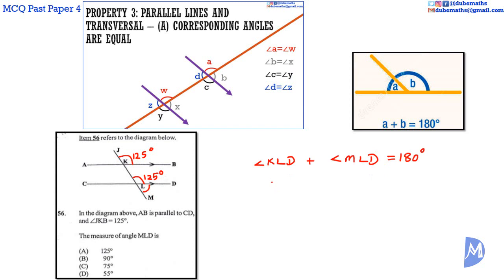Angle KLD equals 125 degrees. Subtracting 125 degrees from both sides: angle MLD equals 180 degrees minus 125 degrees. Angle MLD is equal to 55 degrees. The answer is D.